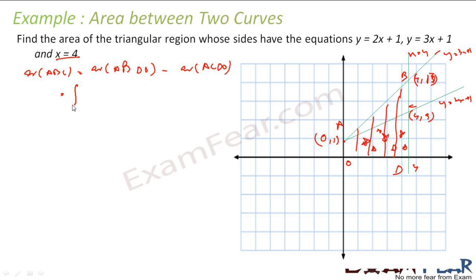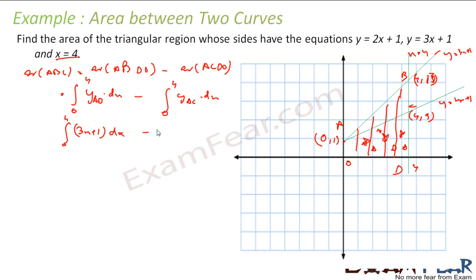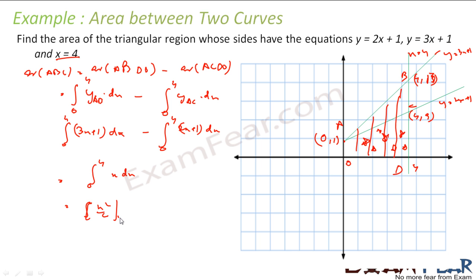ABDO is the integral of line AB with respect to x, x from 0 to 4, minus the integral of line AC with respect to x, x from 0 to 4. For line AB, y equals 3x plus 1, and for line AC, y equals 2x plus 1. This gives the integral from 0 to 4 of (3x+1 - (2x+1)) dx, which is the integral of x dx. That becomes x²/2 evaluated from 0 to 4, giving 16/2 = 8.